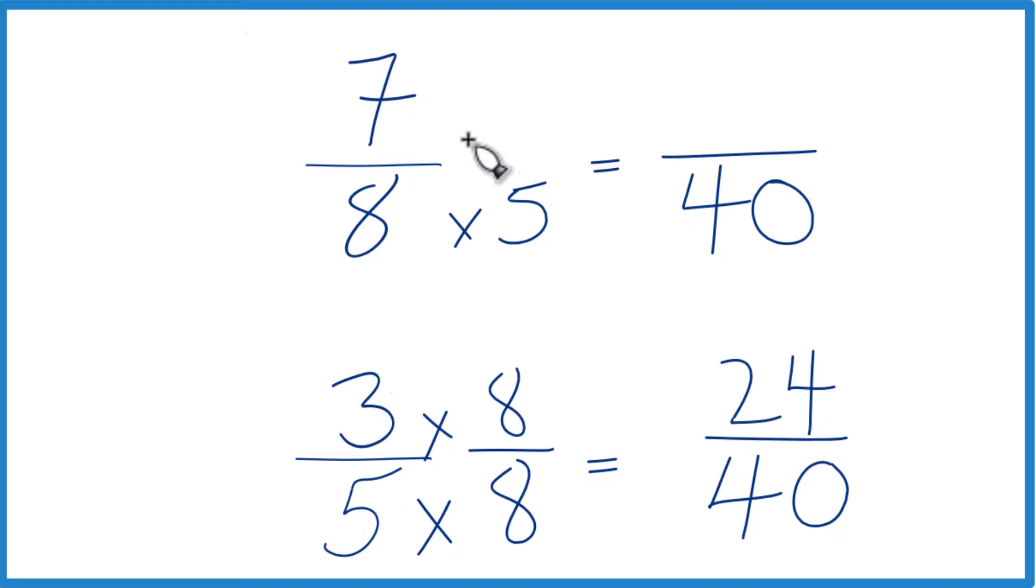Up here, let's multiply the numerator by 5. So we have 5 over 5. 7 times 5, that's 35.